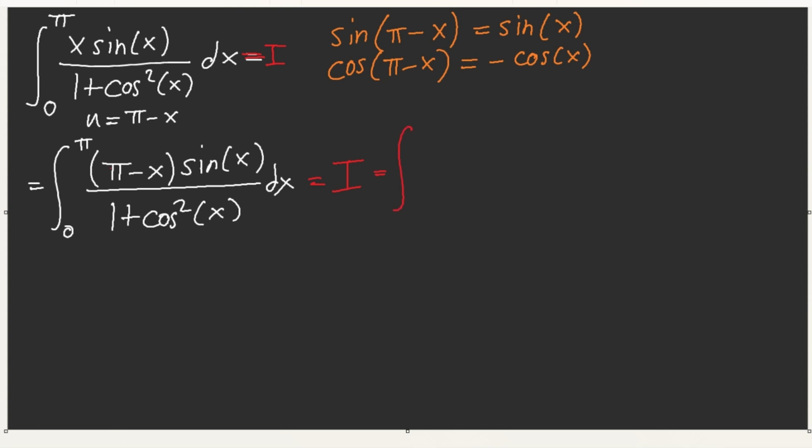I, if we separate this from zero to pi, we have pi sine of x over 1 plus cosine squared. But what about the other term? We have minus, and then the integral of x sine of, wait a minute. That's the same thing here. Isn't that the same thing here, but with a negative? So, we technically have minus I. Aha!